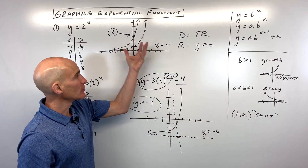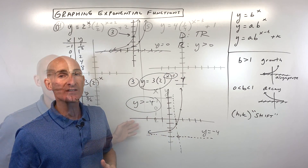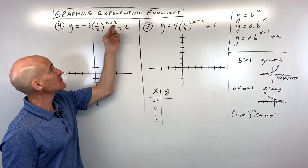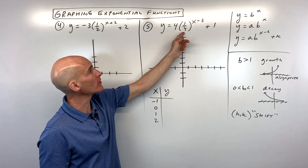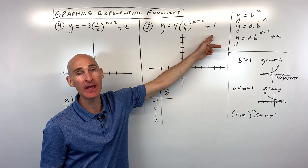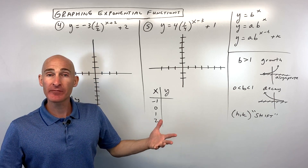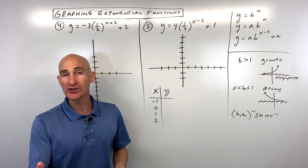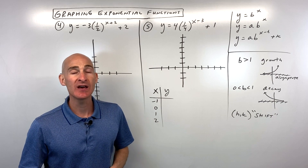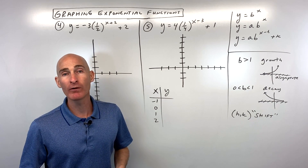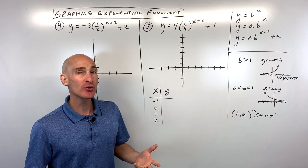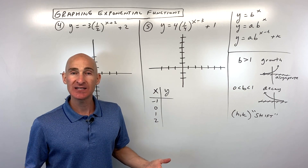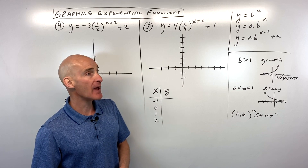Let's go through two more examples. Try number four: y equals negative three times one-half to the x plus two, plus two. And number five: y equals four times one-fourth to the x minus three, plus one. My name is Mario of Mario's Math Tutoring — my channel is about making learning math less stressful so you can raise your grade and pursue your dreams. I also have video courses for Algebra 1, Algebra 2, ACT Math, and SAT Math.